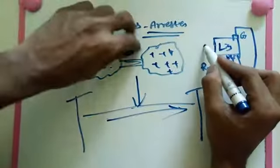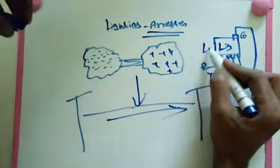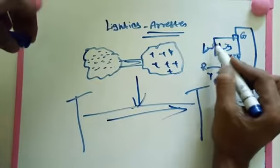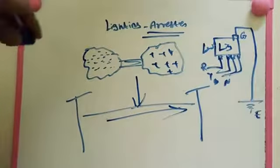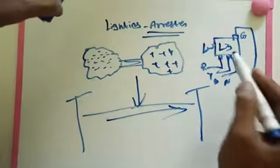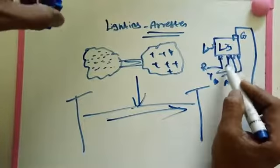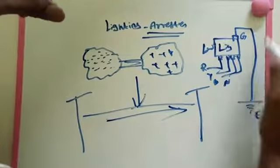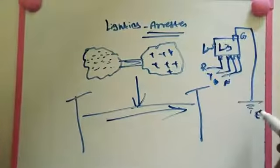The resistance of the Lightning Arrester is very low. Because resistance is low, this is how it works to divert the surge current safely.